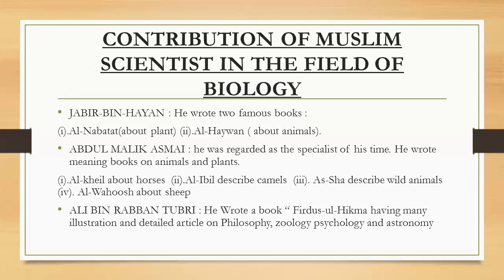Now come to Abdul Malik Asmai. He wrote books including Al-Khil, Al-Ibl, Al-Sha, Al-Wahush, and Khalaq Al-Insan. He described the body structure and functions of horses, camels, sheep, wild animals, and human beings in detail in his books.